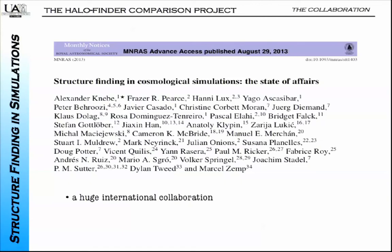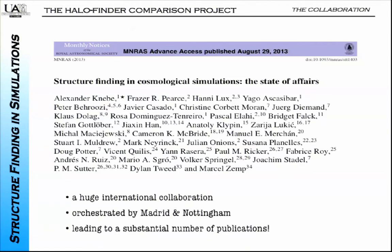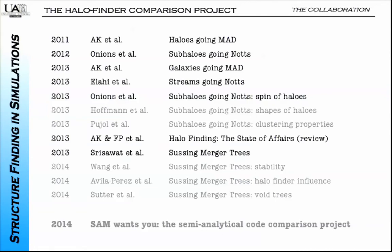It separates methods, special cases, precision, and all these other topics. It is a huge international collaboration. It has led not only to this review paper but basically to an avalanche of papers, starting with the first workshop. We focus on baryonic objects, bound objects, streams. We check spins, shapes. Some papers are in preparation. The plan is also to go to the next stage, which is analytical modeling—and we're trying to get funding for the next workshop. So, if you have 10K to spare, come and see us.